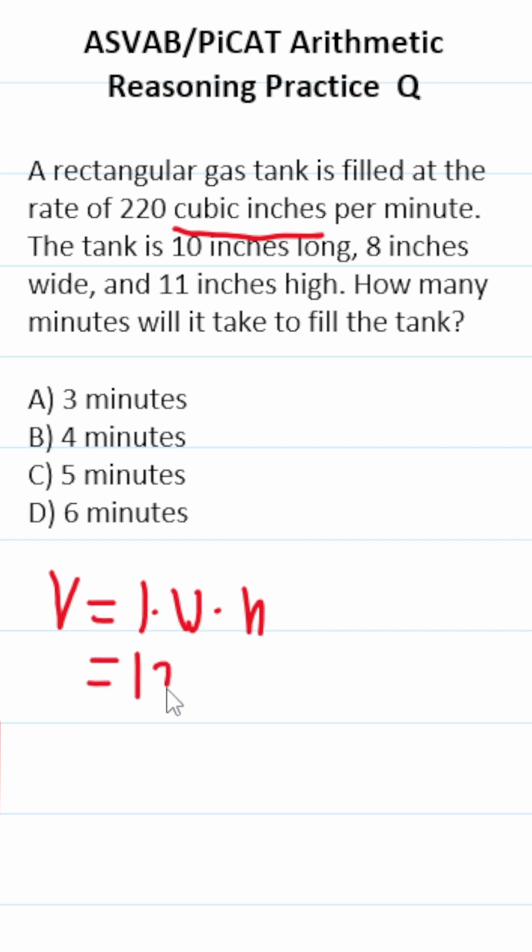In this case, it's going to be 10 times 8 times 11. This math is very easy to do mentally. 8 times 11 is going to be 88. 88 times 10 is going to be 880. So the volume of our gas tank is 880 cubic inches.